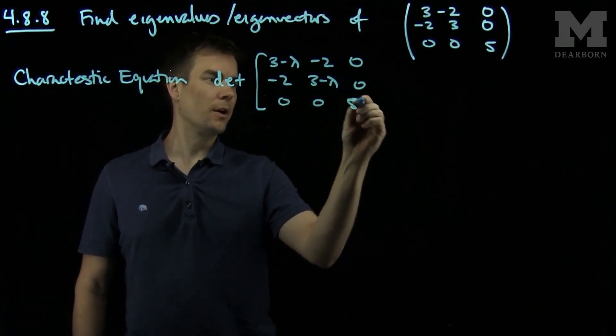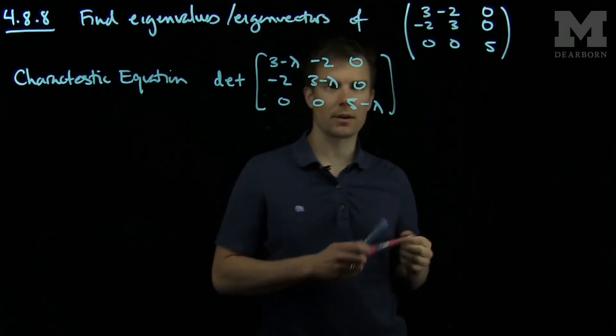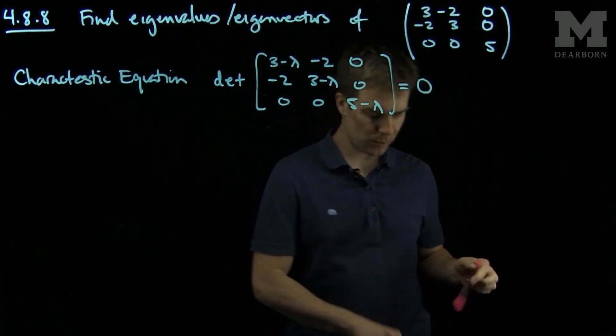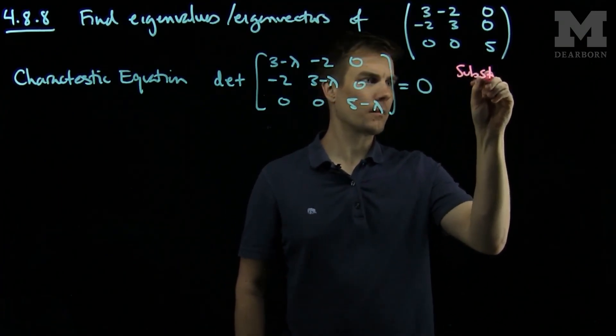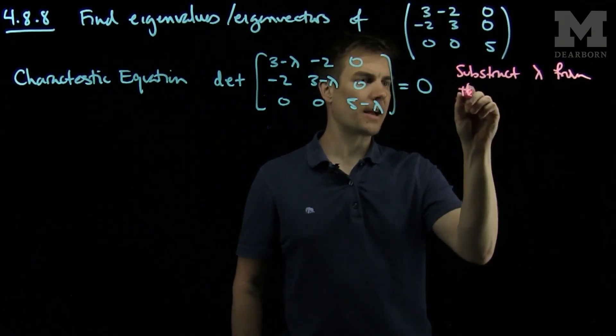0, 0, and 5 minus lambda. What we've done here to find the characteristic equation is we set this equal to 0, we subtract lambda from the main diagonal.